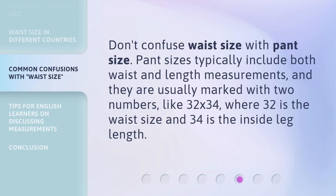Don't confuse waist size with pant size. Pant sizes typically include both waist and length measurements, and they are usually marked with two numbers, like 32 by 34, where 32 is the waist size and 34 is the inside leg length.